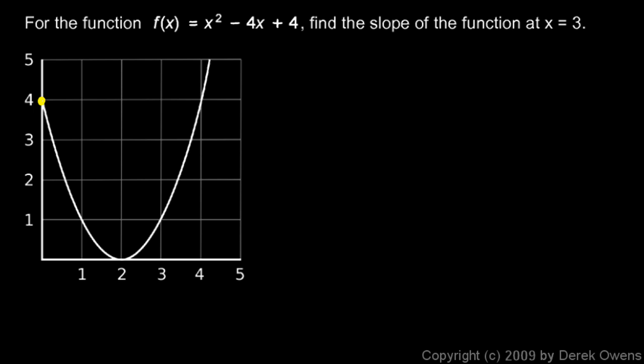This parabola goes through the points (0, 4), (1, 1), (2, 0), (3, 1), and (4, 4). You can check that yourself, or you can just take my word for it here on the graph, but we're told to look at the point x equals 3 right here.